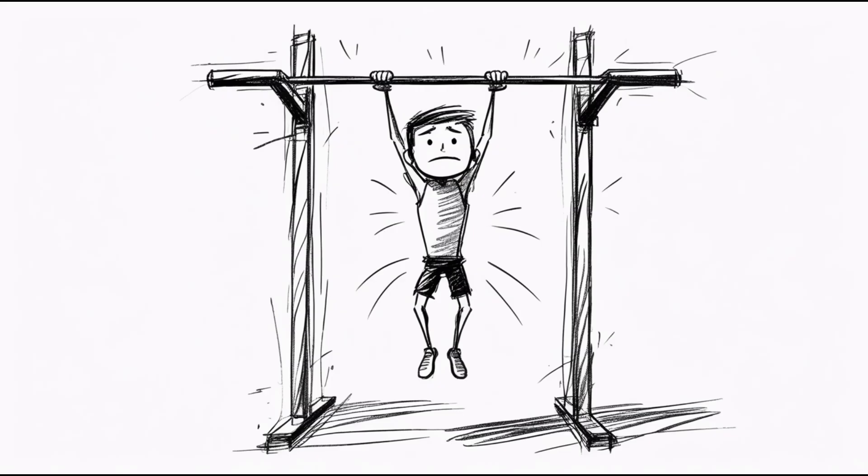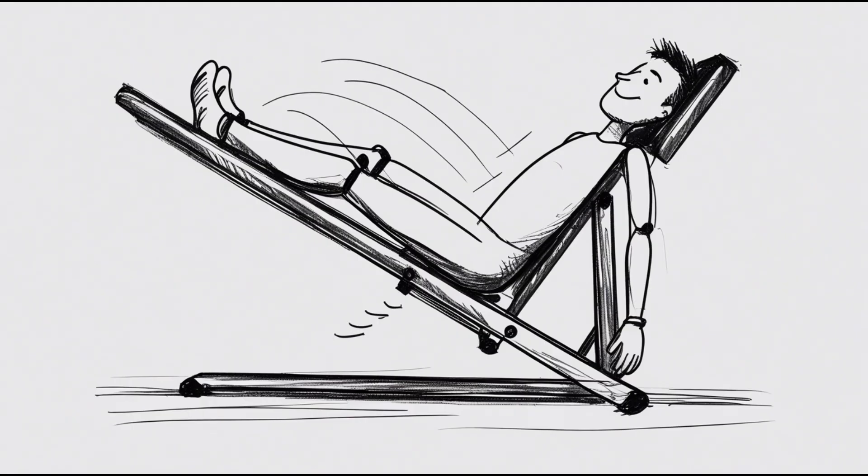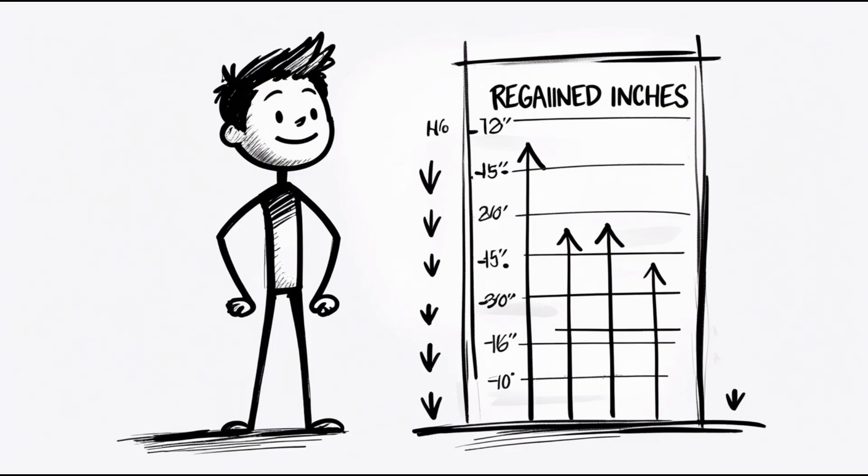Spinal decompression exercises. Hang from a pull-up bar for two minutes a day. Practice yoga poses like cobra or upward dog. Use an inversion table if you can. Think of it like stretching out a slinky that got tangled. Once you decompress your spine daily, you'll regain lost inches and stand straighter instantly.